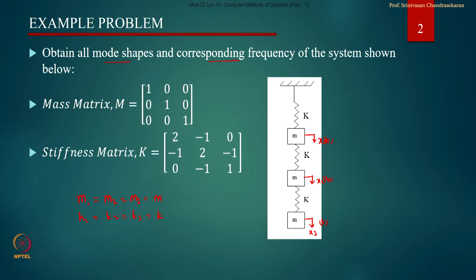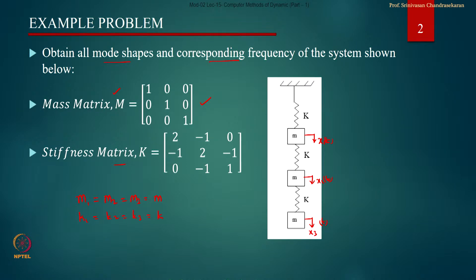When the degrees of freedom are marked at the point where mass is lumped, the mass matrix will be a diagonally dominant matrix, whereas off-diagonal elements will all be zero — which we already know — and there is no confusion in writing the mass matrix. To write the stiffness matrix, we need to formulate the equation of motion by Newton's method. Let us do that quickly for this specific problem.